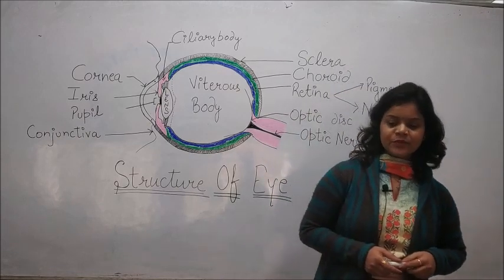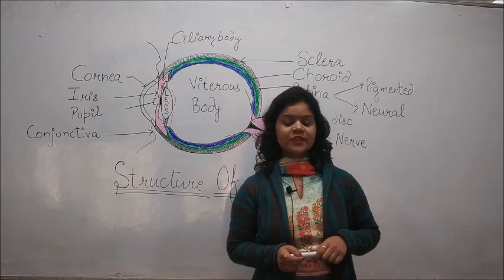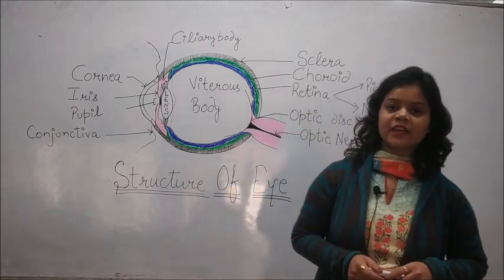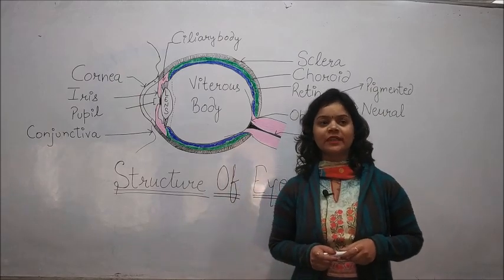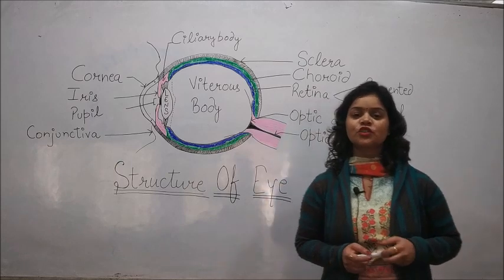The eyeball is a sensory organ responsible for the sense of vision. It is supplied by the second cranial nerve, that is the optic nerve. It is situated in the orbital cavity or we can say the eye socket. So let's see about the structure of the eye.